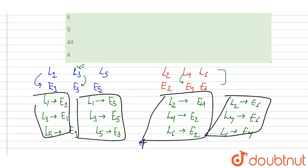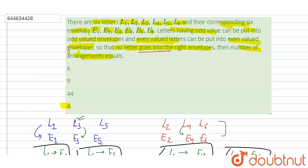So this is the right answer. So which option is correct? You can see option number D is the right answer in which the arrangement can be done in four ways. So thank you.